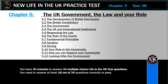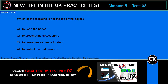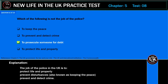Which of the following is NOT the job of the police? To keep the peace; to prevent and detect crime; to prosecute someone for debt; to protect life and property. Correct answer: to prosecute someone for debt. Explanation: The job of the police in the UK is to protect life and property, prevent disturbances (also known as keeping the peace), and prevent and detect crime.